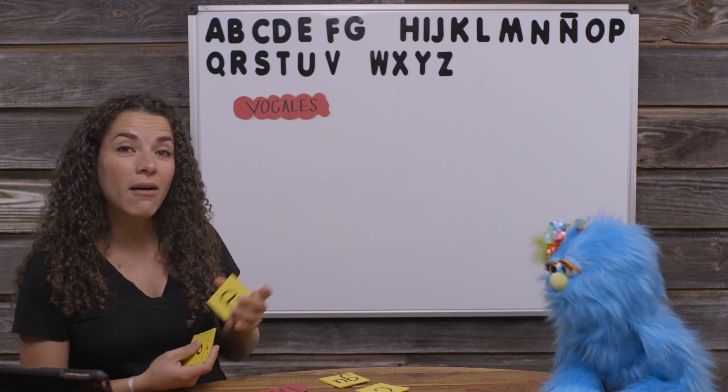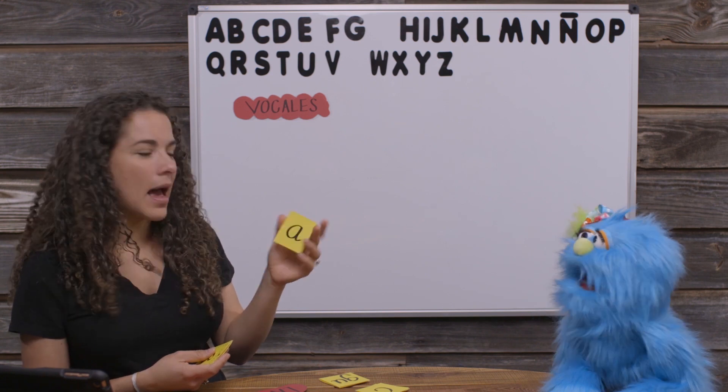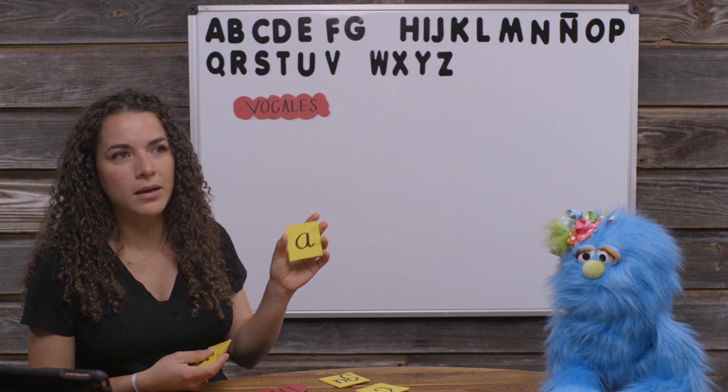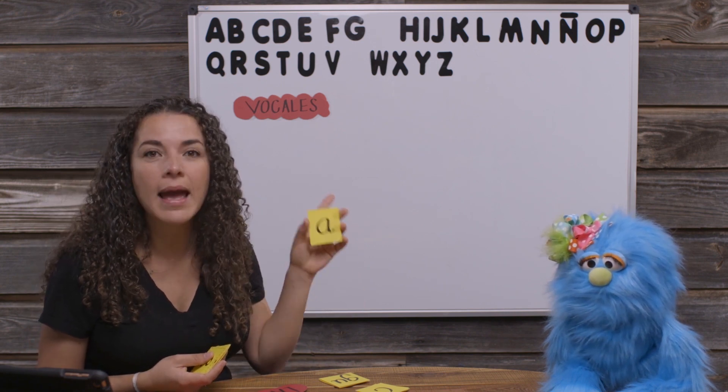Okay, our first vowel is A. Isn't that simple? Now, we don't call it A or something different. You just open your mouth and it's very clear the sound. You say A.